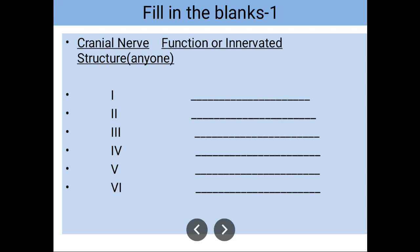So here in front of us, the example is their function or innervated structure. First of all, the cranial nerve number one, that name is the olfactory, and mainly the function for the smell.